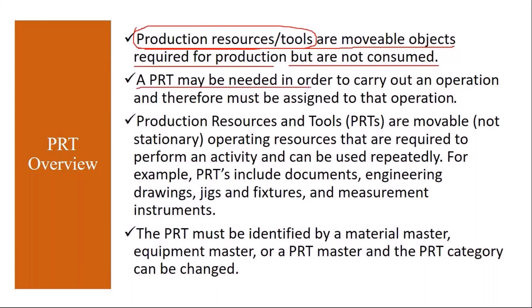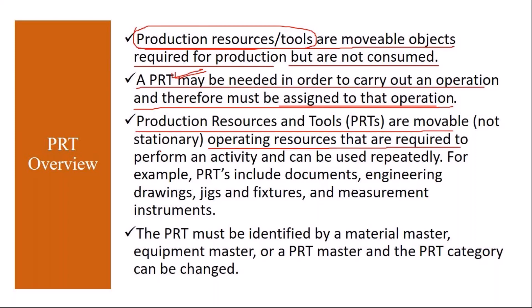A PRT may be needed in order to carry out an operation and therefore must be assigned to that operation. Production resource tools are movable operating resources required to perform an activity and can be used repeatedly. For example, you use a PRT in one order; once that production activity is completed, the same PRT can be used for another production order of the same or a different product.